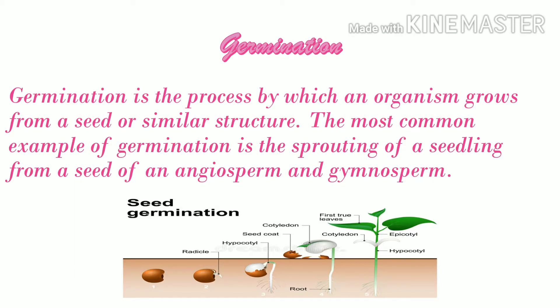As the plant grows in size, it develops leaves. The cotyledons shrink and disappear. And thus, the new baby plant develops gradually.